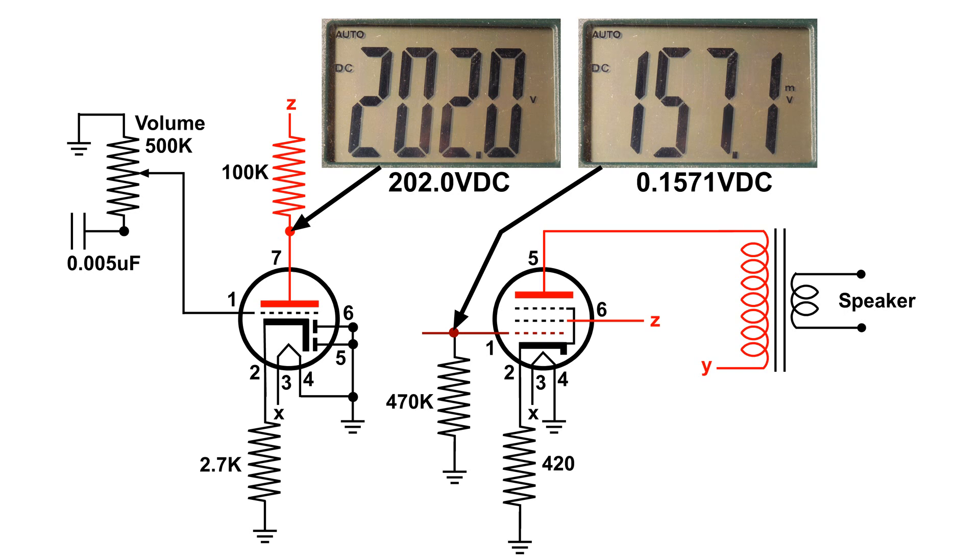And at pin 7 we also have an audio signal. And we want to get that audio signal to pin 1 on the right. And the voltages as you can see are very different.